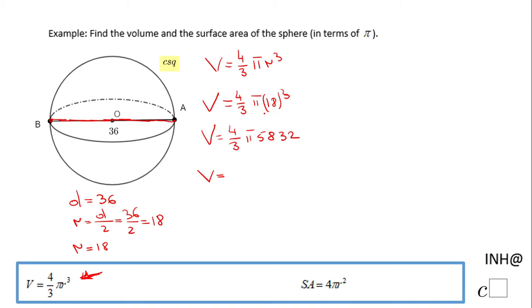Either will be good. So let's say I'm going to multiply by 4 and then I'm going to divide by 3. I end up with a volume of 7776 pi cubic units.